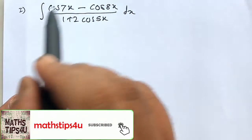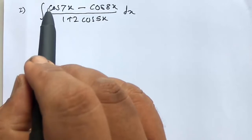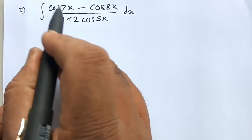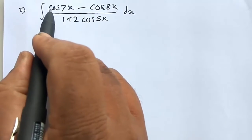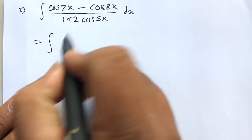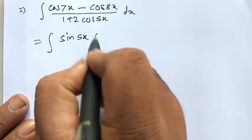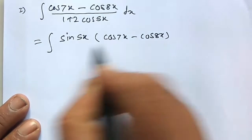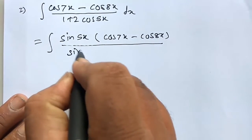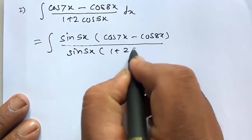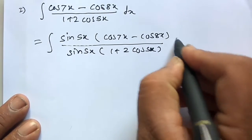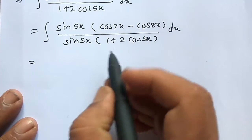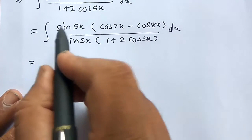This is a typical example. You have to remember the hint for this example. The hint is you have to multiply the numerator and denominator by sin of 5x. So this is equal to multiplying sin 5x to the numerator and denominator: sin 5x into 1 plus 2 cos 5x dx. There is no other alternative method for this, as far as my knowledge is concerned.